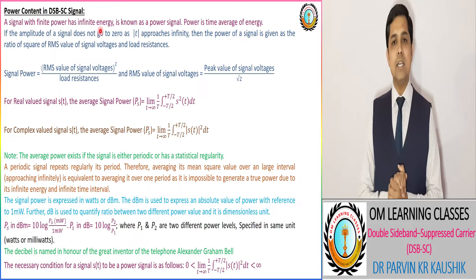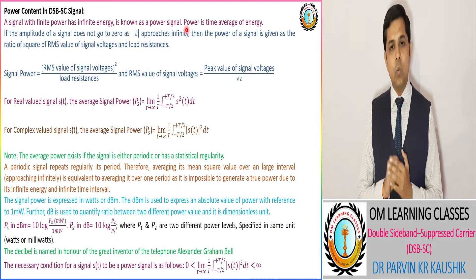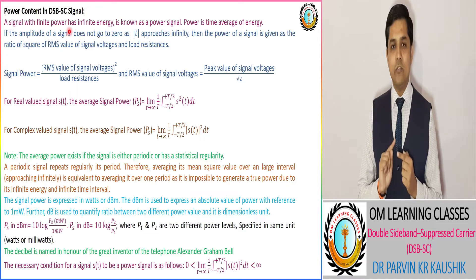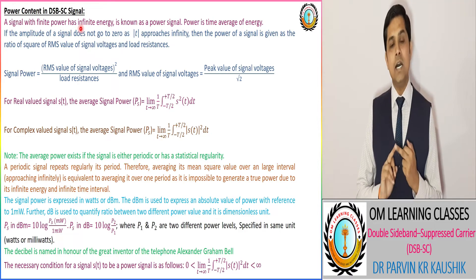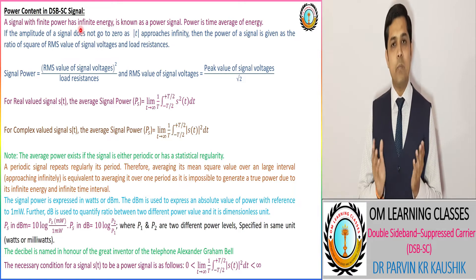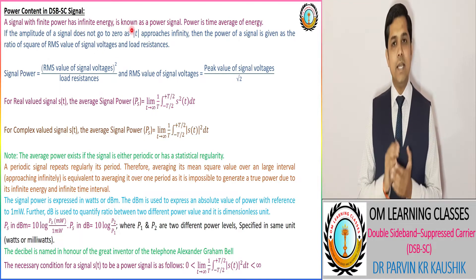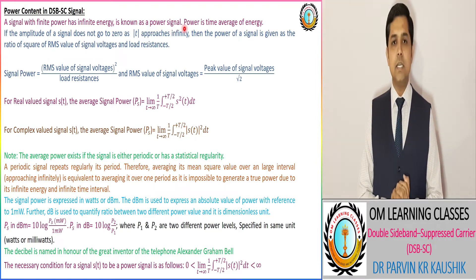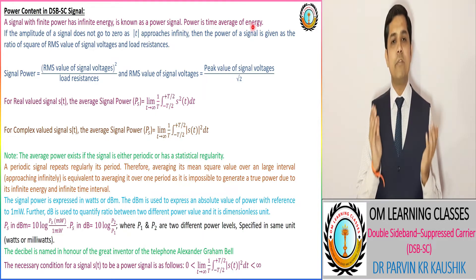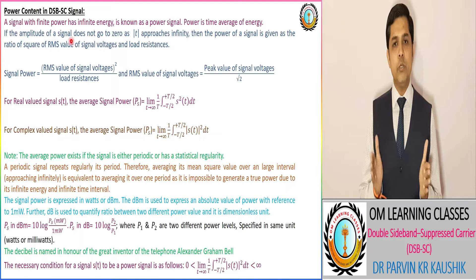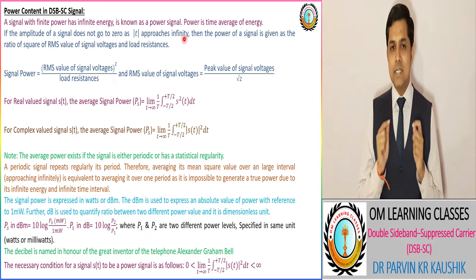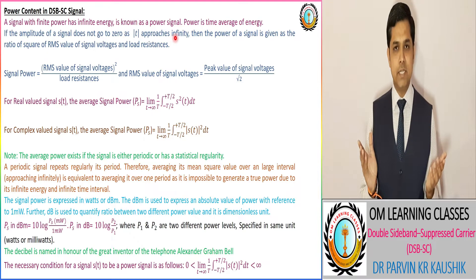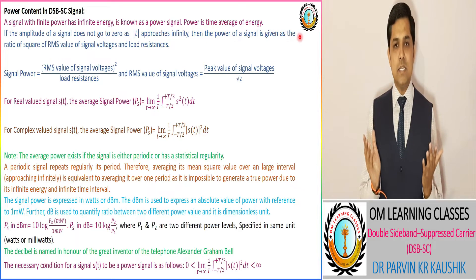A signal with finite power and infinite energy is known as a power signal. There are two conditions: one is the power should be finite, and the second is the energy should be infinite. When both conditions are satisfied, the signal is known as a power signal. The power is the time average of energy.